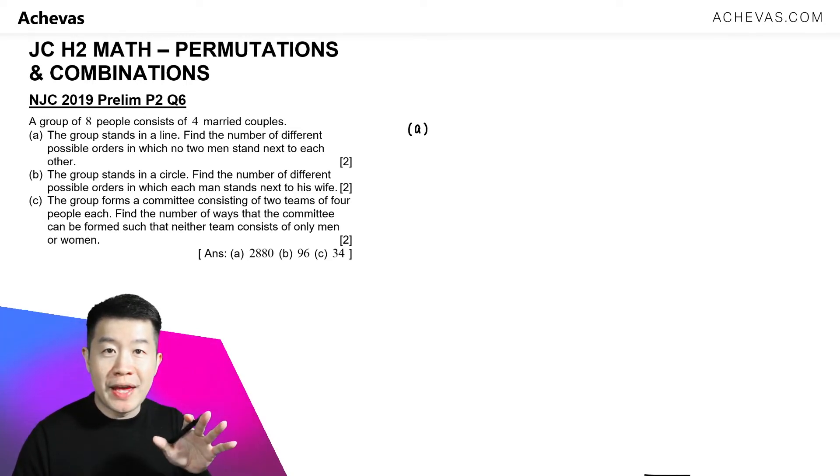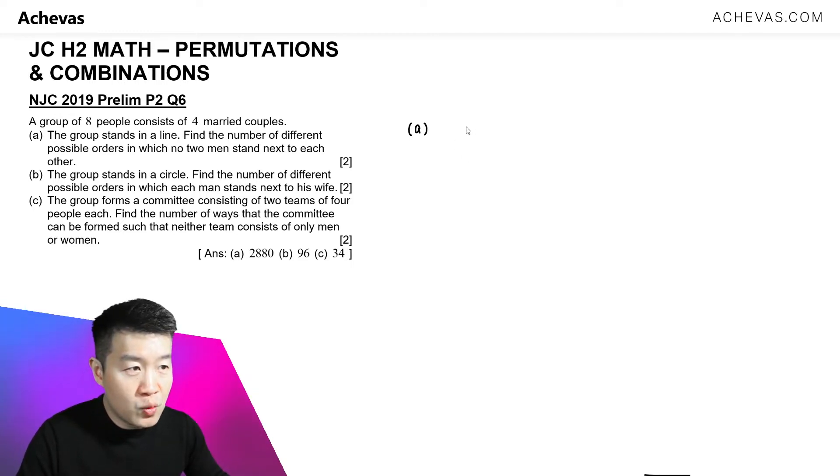To do that, we are going to make use of what we have on the Achievers TV. Under permutations and combinations, we have the slotting method in the theory outline. We're going to use that to make sure that the men are always separated. To do that, let's try to arrange the four women first.